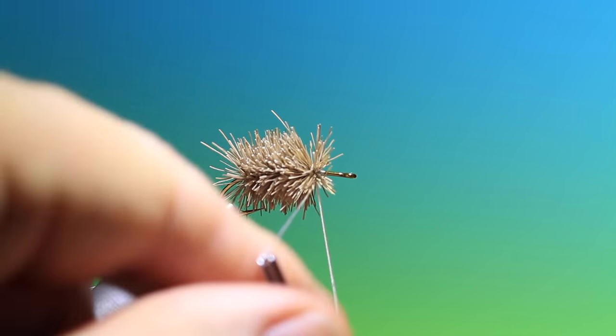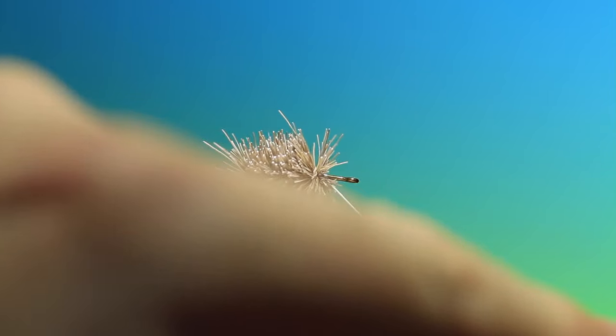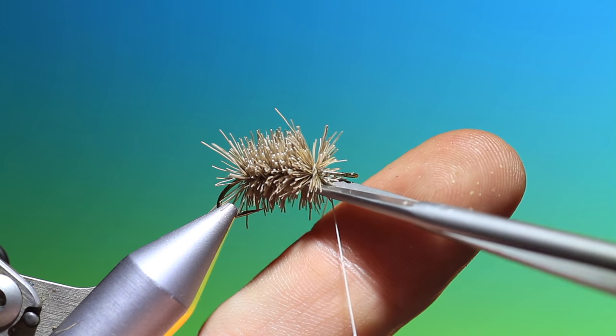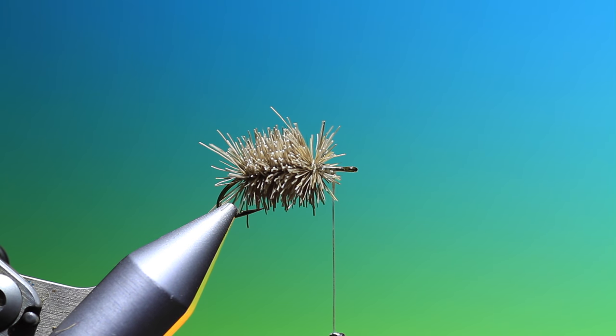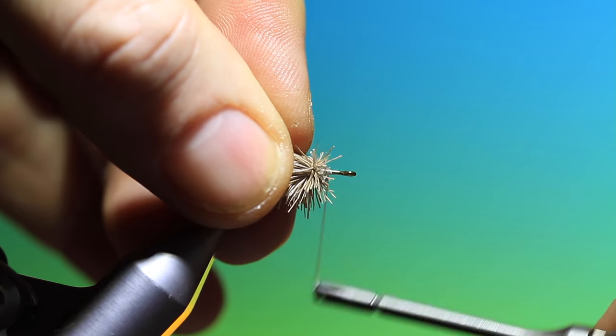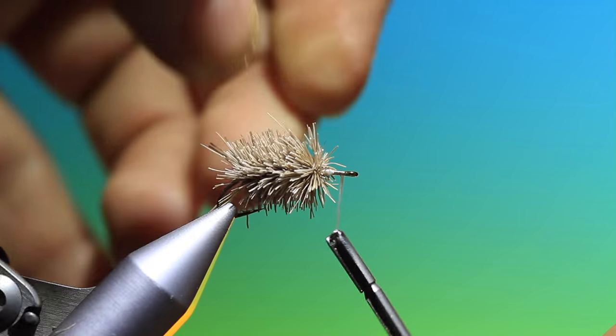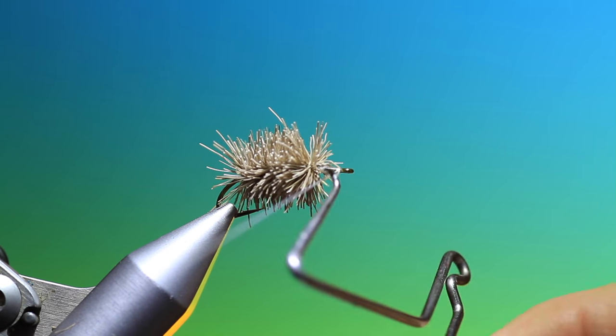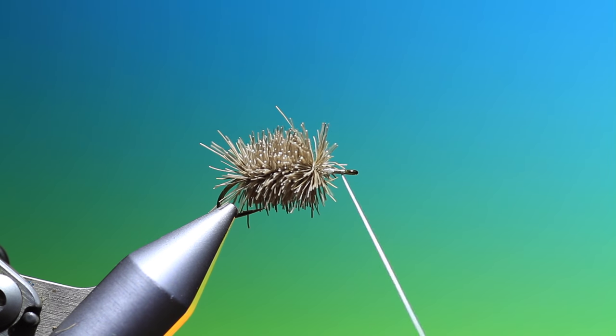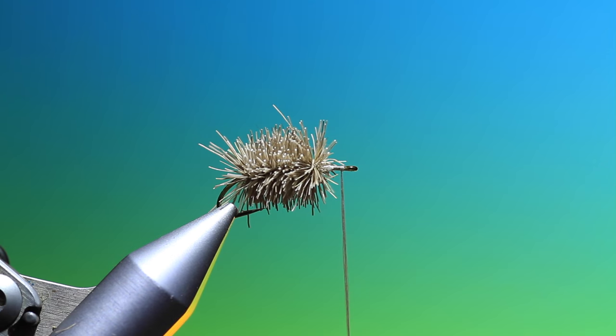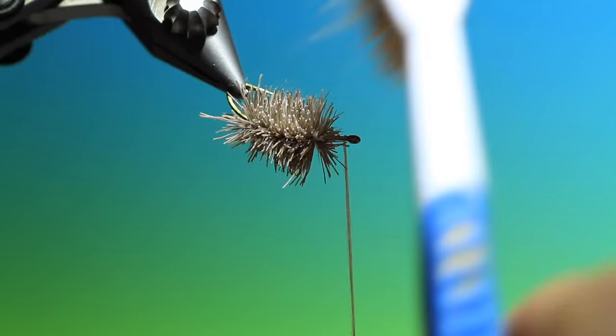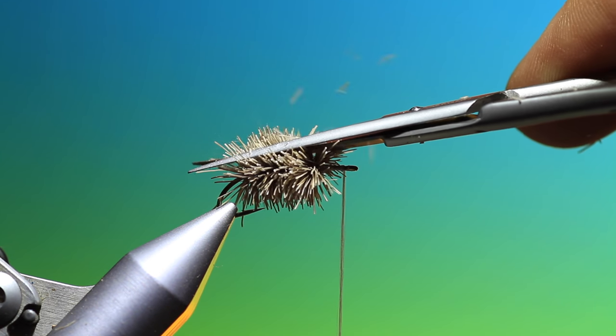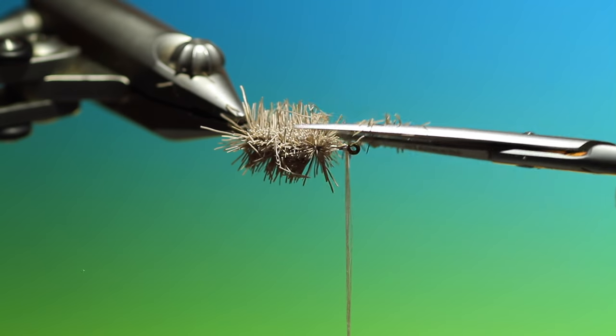Pull the deer hair back and tie off the dubbing loop. You can remove that. Tie it down. And then what I like to do again here is put one whip finish in just in case I burn the tying thread. So I'll give that just a little brush, open up the fibers. And then we'll trim it down to form the body of the daddy.